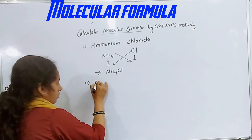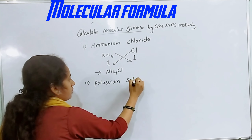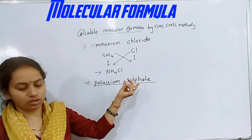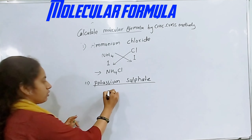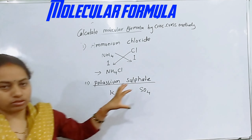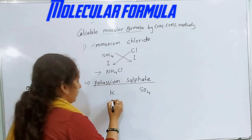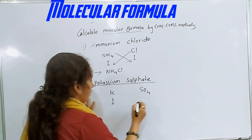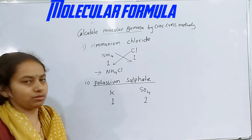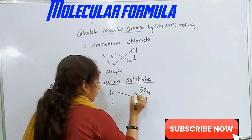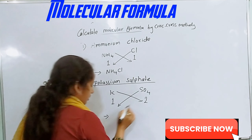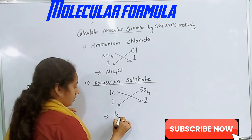Potassium sulfate. If you have a symbol and you want to know the valence, potassium valence is 1 and sulfate valence is 2. Using the criss-cross method, we need to exchange and cross the valencies.